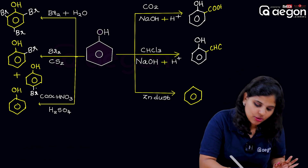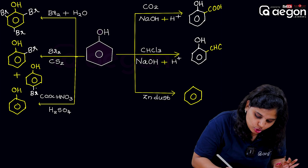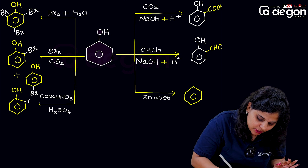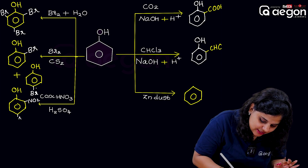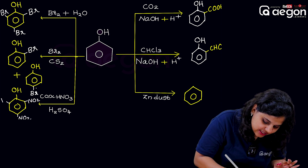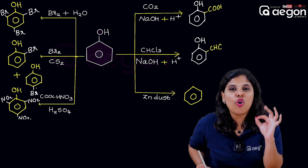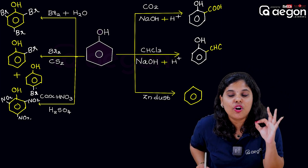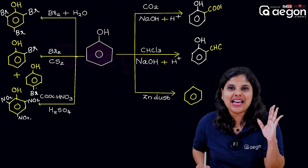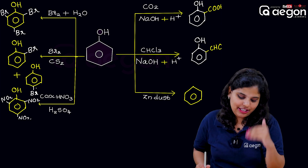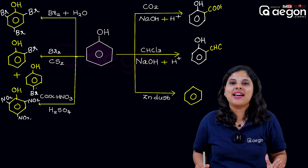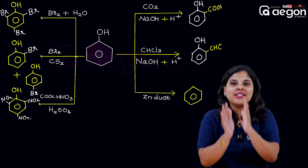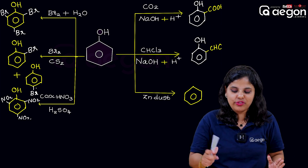In the 2, 4, 6 positions, you substitute NO₂. So this product is known as 2,4,6-trinitrophenol. You can also call it picric acid — 2,4,6-trinitrophenol is picric acid.